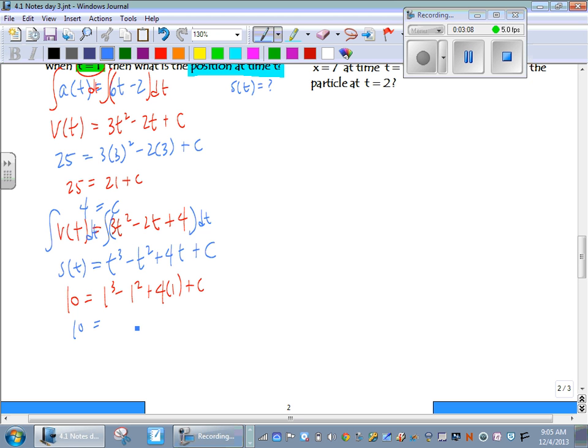So 10 equals 4 plus c, which means c is going to be 6. So our position equation, s of t, equals t cubed minus t squared plus 4t plus 6.